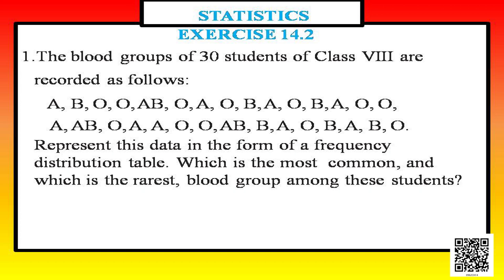Now for exercise 14.2. Question 1: the blood group of 30 students of class 8 are recorded — A, B, O, O, O, A, B, O, A, and so on. Represent this data in a frequency distribution table, and find which is the most common and which is the rarest blood group among these students.